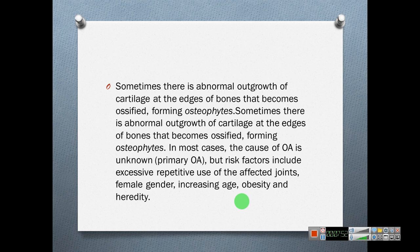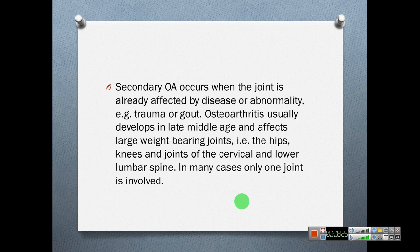In most cases, the cause of osteoarthritis is unknown — primary osteoarthritis — but contributing factors include excessive repetitive use of affected joints, female gender, increasing age, obesity, and heredity. Doctors may advise weight reduction since obesity is a risk factor. Secondary osteoarthritis occurs when the joint is already affected by disease or abnormality, such as trauma or gout. Osteoarthritis usually develops in late middle age and affects large weight-bearing joints — for example, the hip joint, knee joint, and joints of the cervical and lower lumbar spine. In many cases, only one joint is involved.